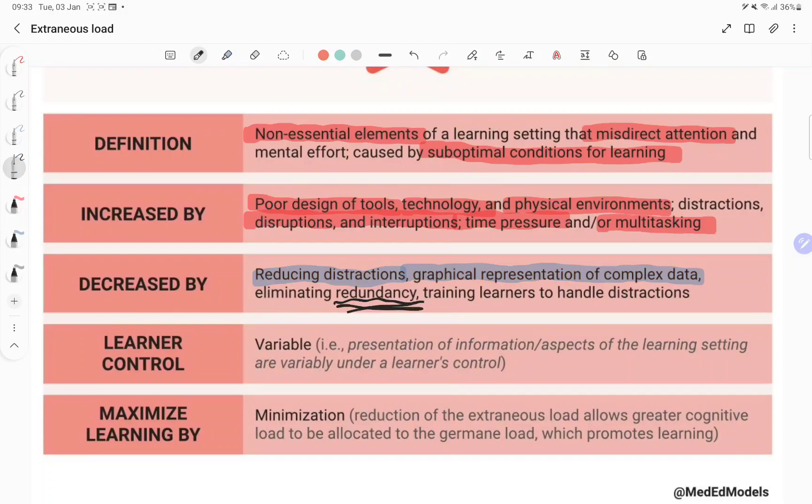And then this thing which says eliminating redundancy. Now redundancy is a huge amount of repetition where you say the same thing over and over again in different ways, forcing the learner to try and work out which one's important. And then finally, getting the students to handle distractions. And that's really important.